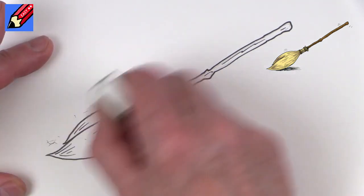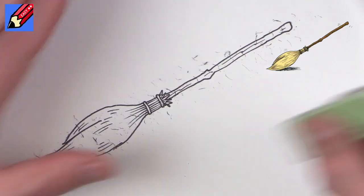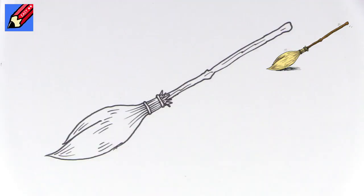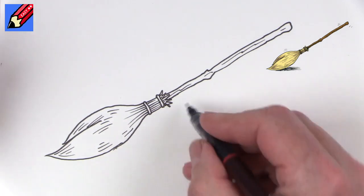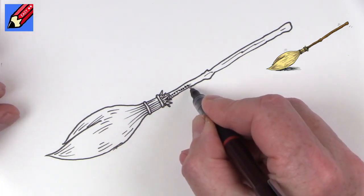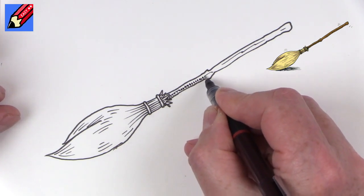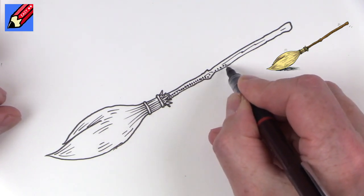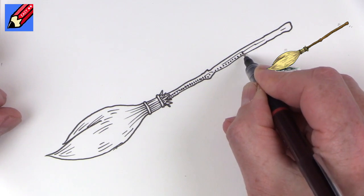And then when you're sure that the ink is dry, you can erase those pencil lines. I feel I want to have a couple more things there, maybe something there, and I'm just going to put a little bit of shading all the way down the side of this broomstick just to make it look a little bit sort of 3D like that.